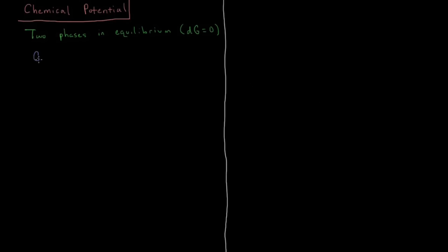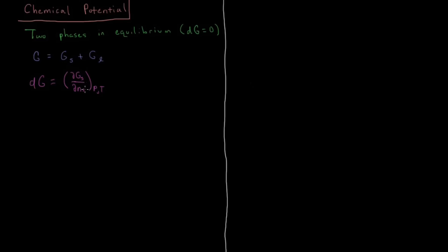If we assume we have a solid and a liquid phase, the total Gibbs energy is going to be the Gibbs energy of the solid plus the Gibbs energy of the liquid. So if we have some change in that Gibbs energy, dG, that would equal the partial derivative of the solid Gibbs energy with respect to the number of particles in the solid, N_S, at constant pressure and temperature. Remember, Gibbs energy is a function of pressure and temperature, so we're keeping those two constant, meaning Gibbs energy otherwise stays constant except for exchanging particles.